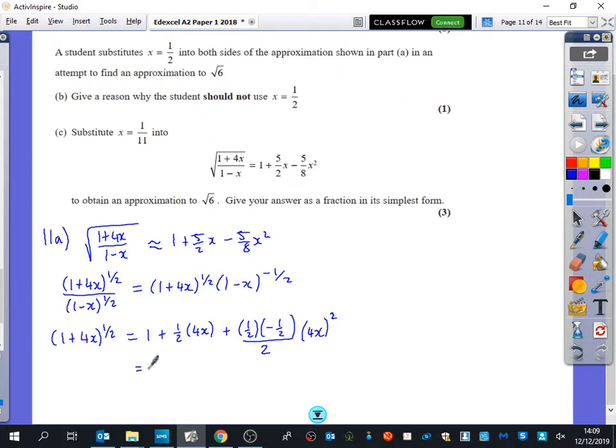If I simplify this I've got 1 plus 2x. Let's just grab my calculator to save my brain a bit of time here. It's definitely going to be a minus because of these bits that I've got here. So that's a half times a half divided by 2 times 4 squared and that becomes minus 2x squared.